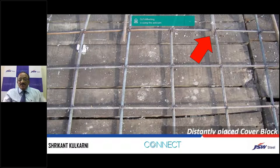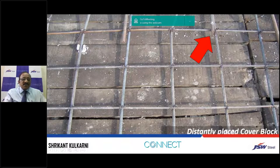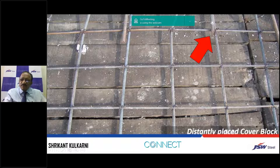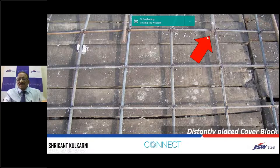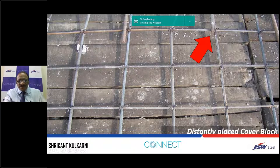Looking at cover blocks — one cover block is placed here, but I don't find any other cover block within at least one meter distance. A single cover block cannot keep the reinforcement at the correct level when workers walk on top. Ideally, at every two-feet distance there should be one cover block, provided in a zigzag manner — one here, then one there, then the next here, and so on.